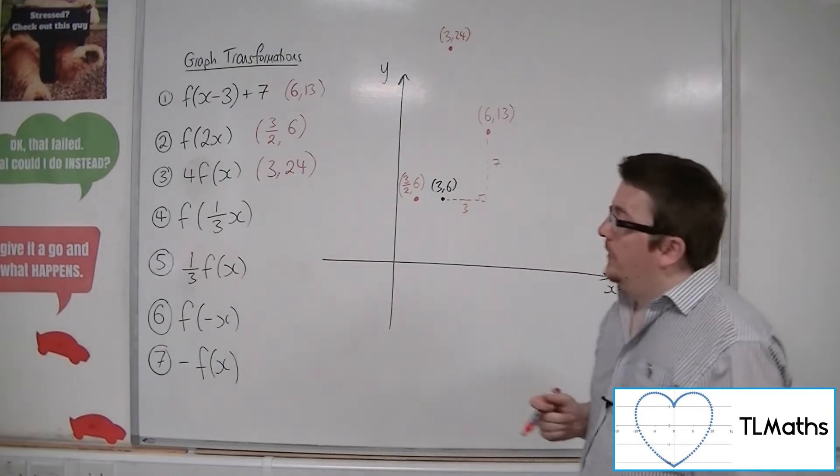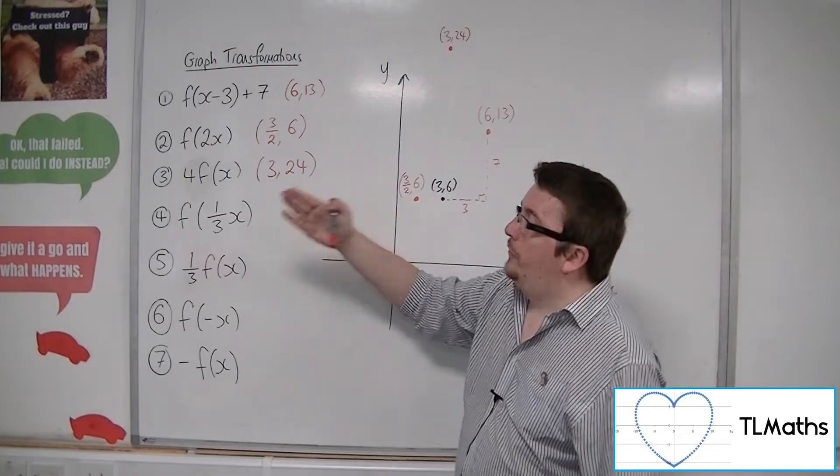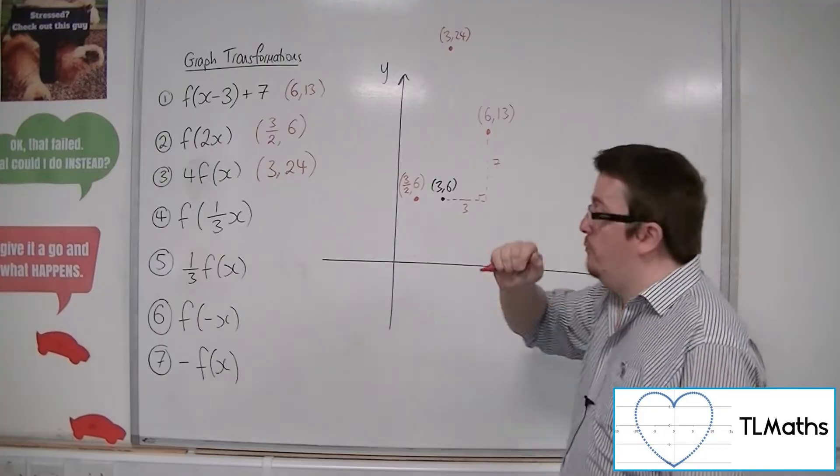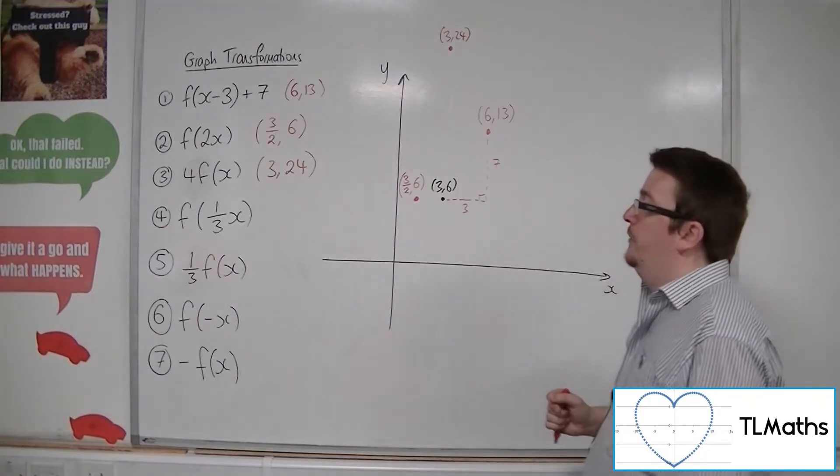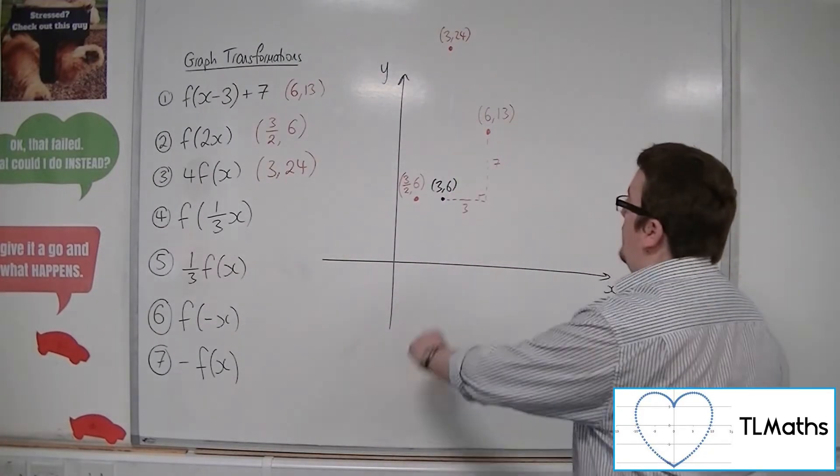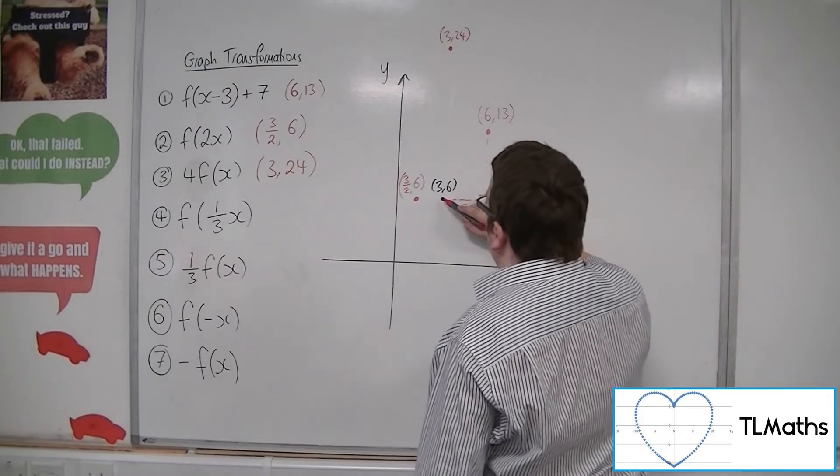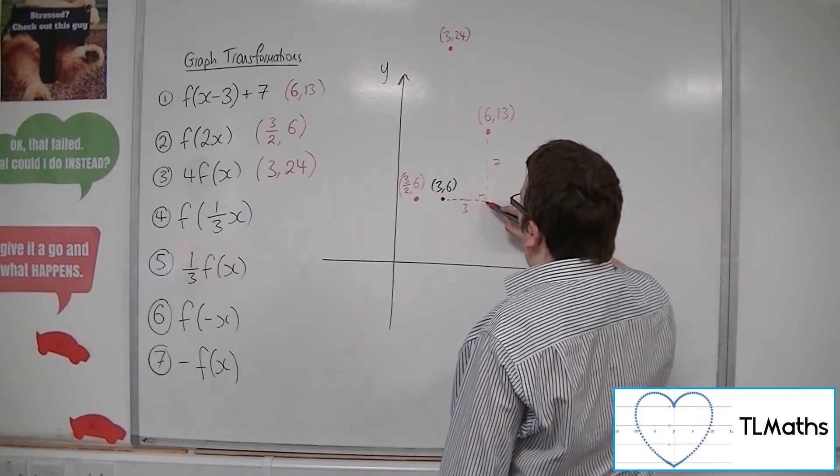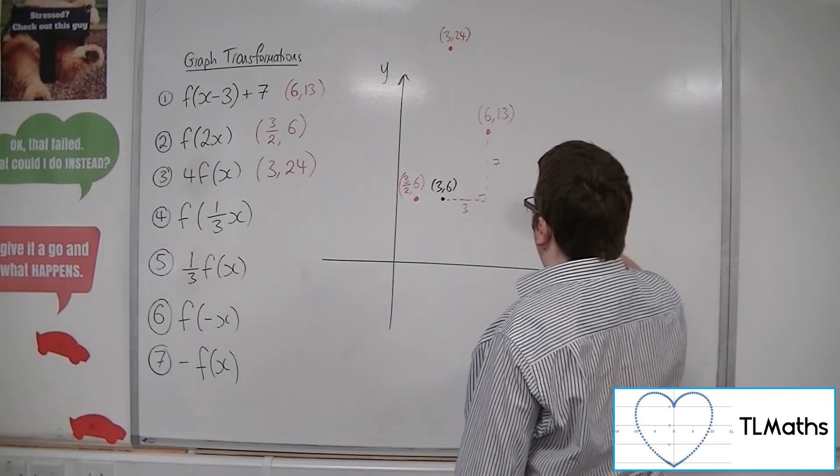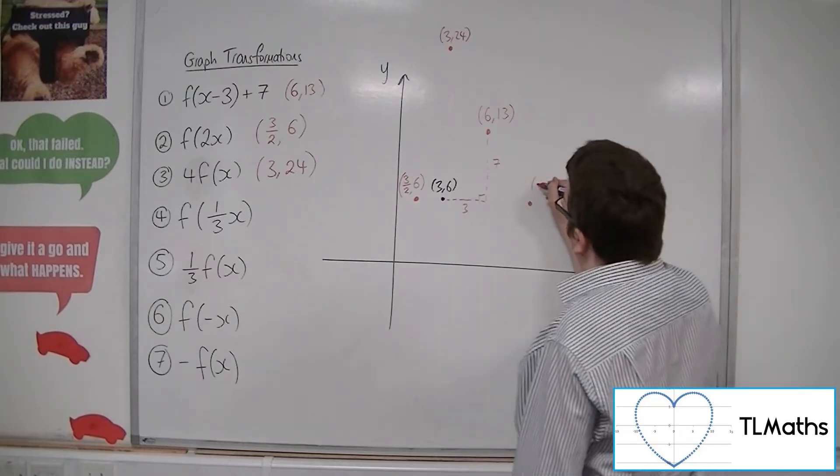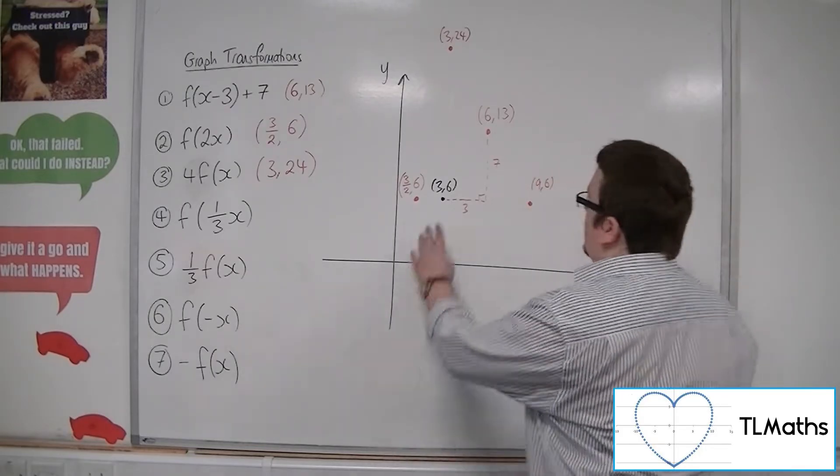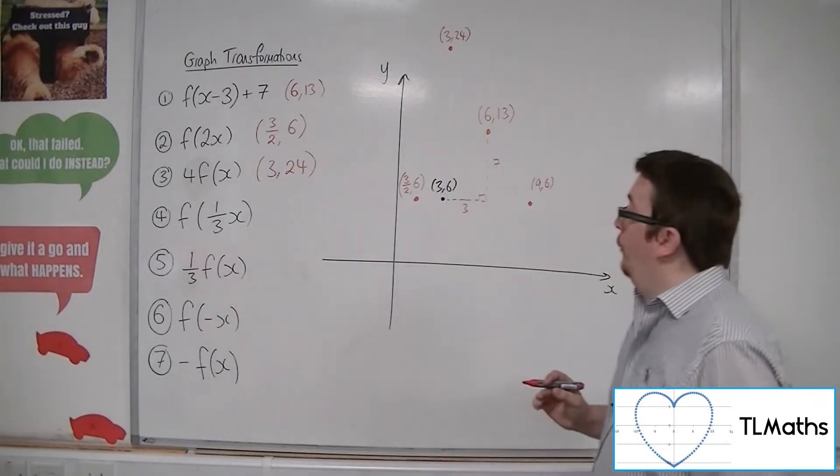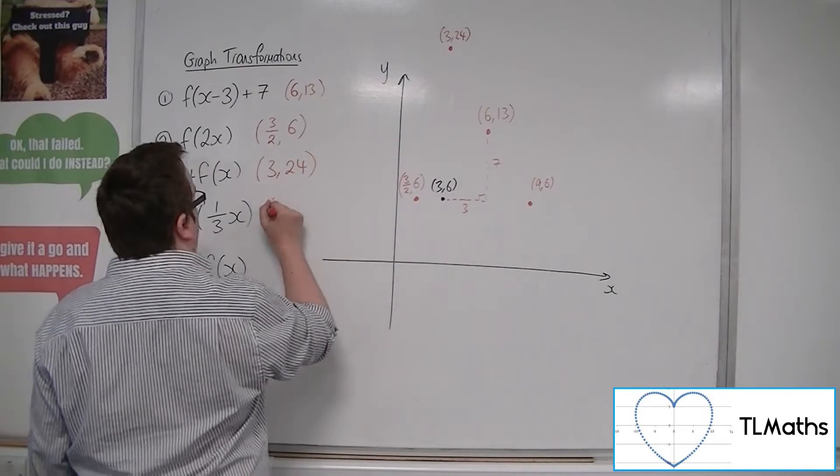Now f(1/3 x), this is a stretch parallel to the x-axis this time, factor 3, because it's 1 over, it's the reciprocal of the coefficient of x that's there. So this is factor 3 in the x direction. So this would be up to 9, 6. So we'd have 6, 6, and then we would have 9, 6. So that the x coordinate is 3 times as far from the y-axis as it was originally. So that would be 9, 6.